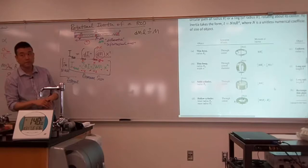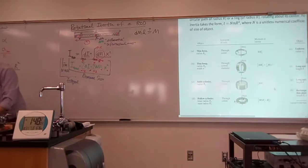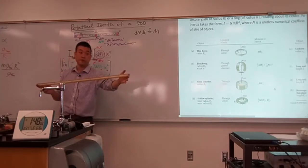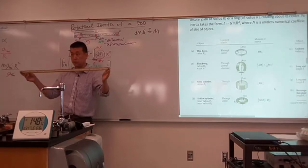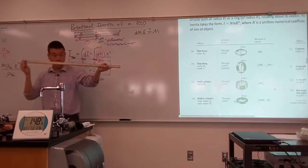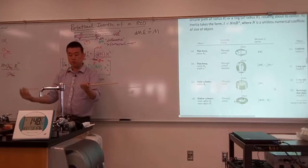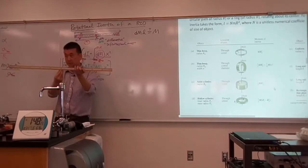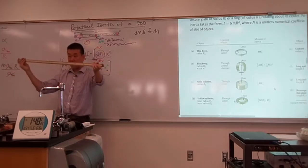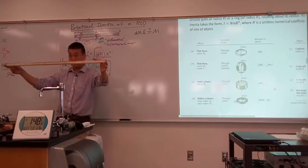Let me go through this step by step with the example. This is something you already have an intuitive feel for — you're just not used to dealing with it in a symbolic format. So: 100 centimeter ruler, 100 grams. If I asked you what is the mass of a 1 centimeter portion of it, what would your answer be? 1 gram. All of you know the answer to that.